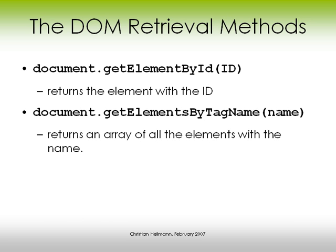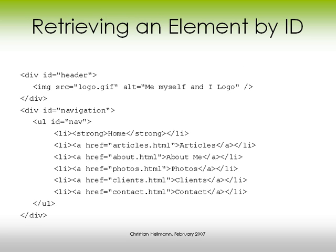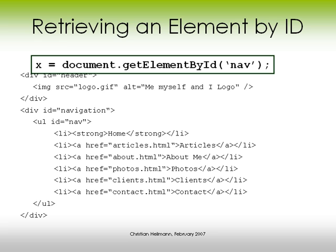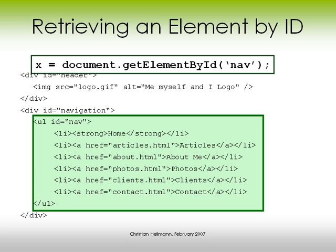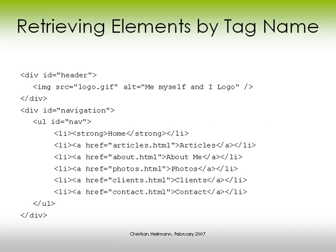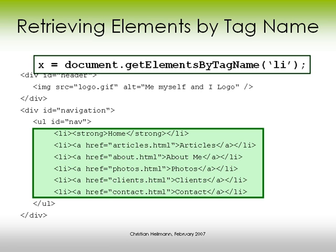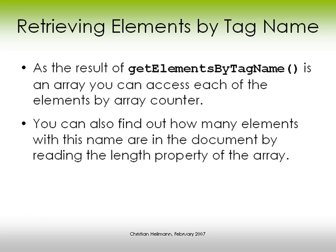We have two methods to retrieve different elements of the page. We have getElementById, which gives us a single element with the ID we provided. And we have getElementsByTagName, where we define a tag name and get back an array of all the elements with that name. So if we want the element with the id 'nav', we get the ul element. If we want all elements with tag name li, we get those li elements. The result is an array and you can access each element by array index, and also read out the length attribute.